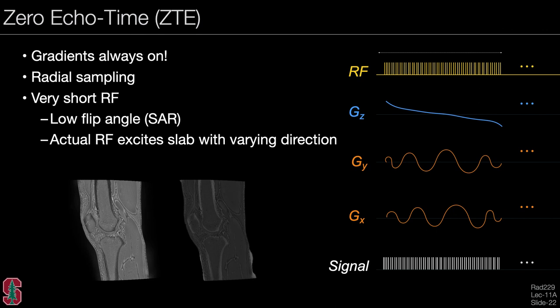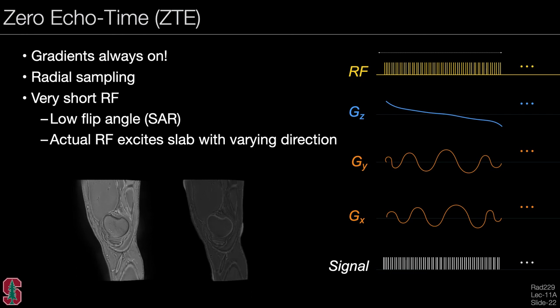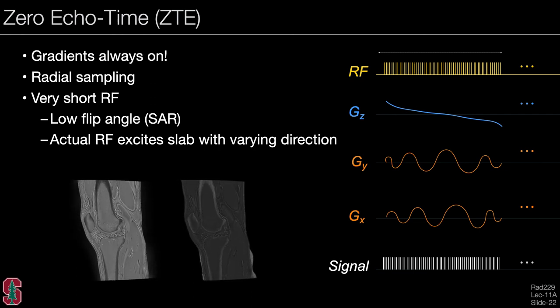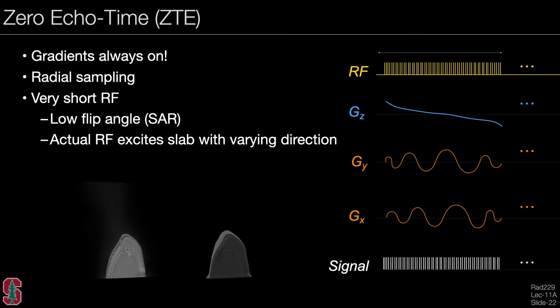Zero-echo-time (ZTE) imaging is an inherently radial sequence where the gradients are always on, even during the RF pulses. Very short RF pulses lead to very low SAR, and because the gradients are on during readout, data is acquired radially in k-space. The RF is slightly spatially selective due to the applied gradients, though this is generally not a problem. ZTE enables imaging of very short T2 structures such as cortical bone, and different contrasts can be generated by combining images in various ways.